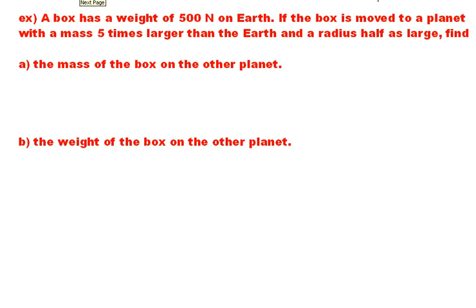So I just pulled out a question here. A box has a weight of 500 Newtons on Earth. If the box is moved to a planet with a mass five times larger than the Earth and a radius half as large, find A, the mass of the box on the other planet, and B, the weight of the box on the other planet.